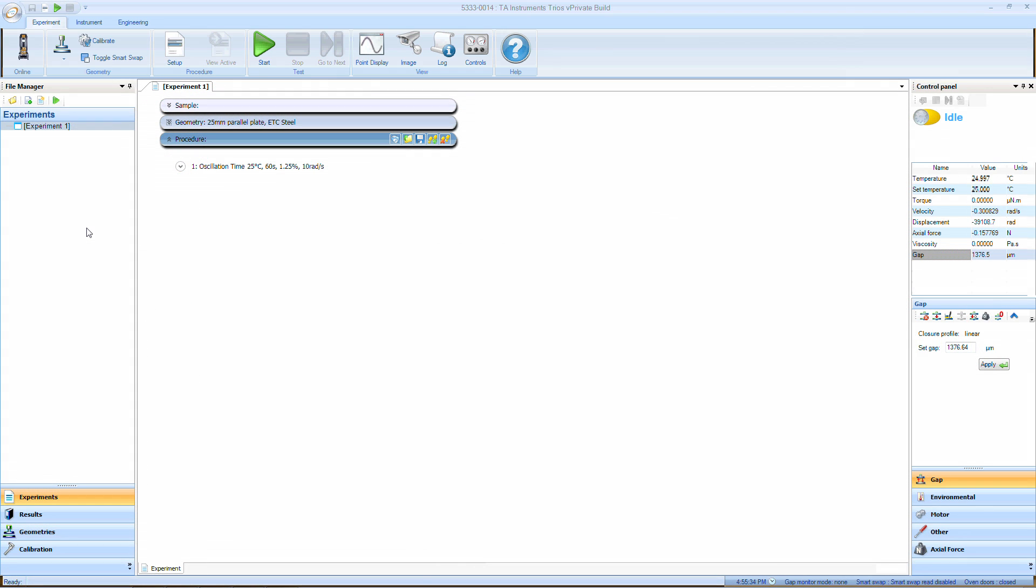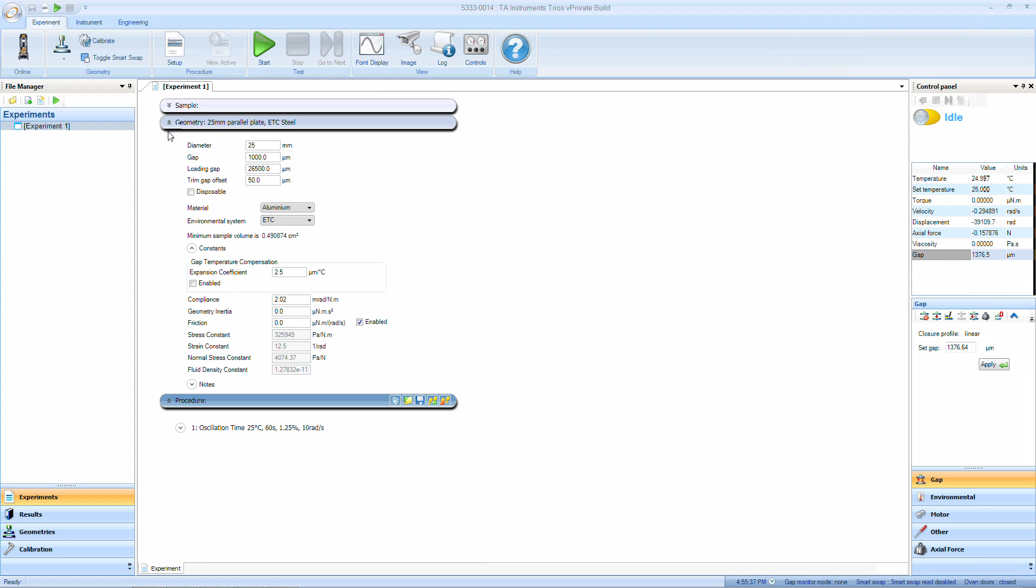When setting up an experiment from the setup window, under Geometry, the gap temperature compensation can be turned on or off as necessary.